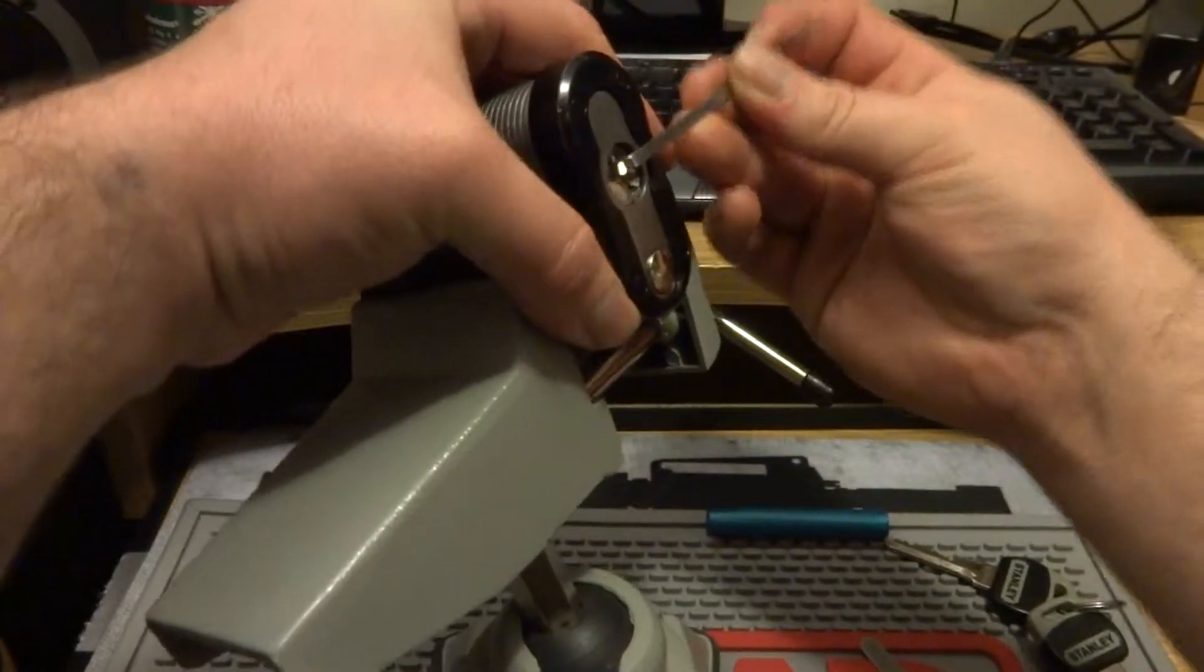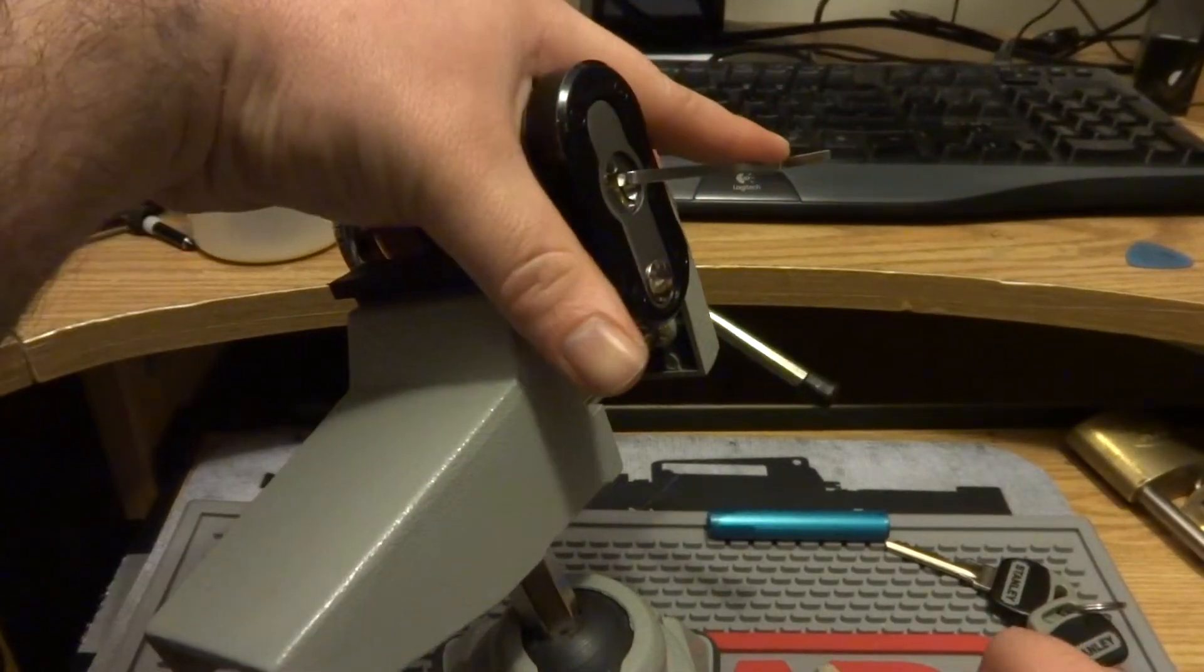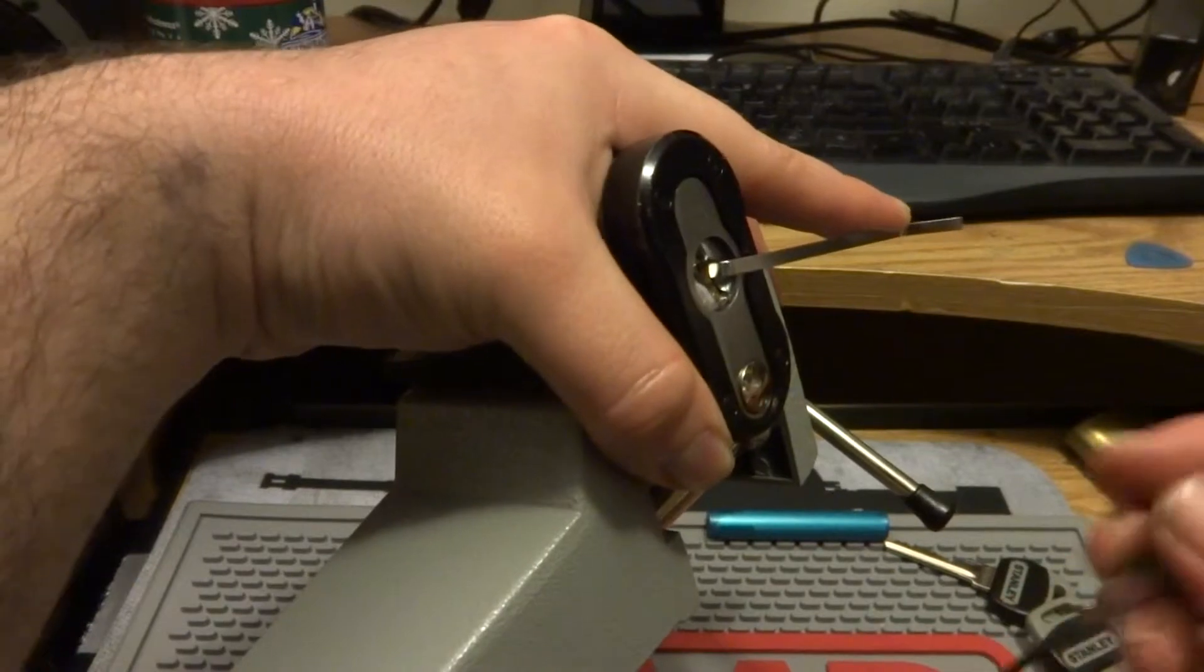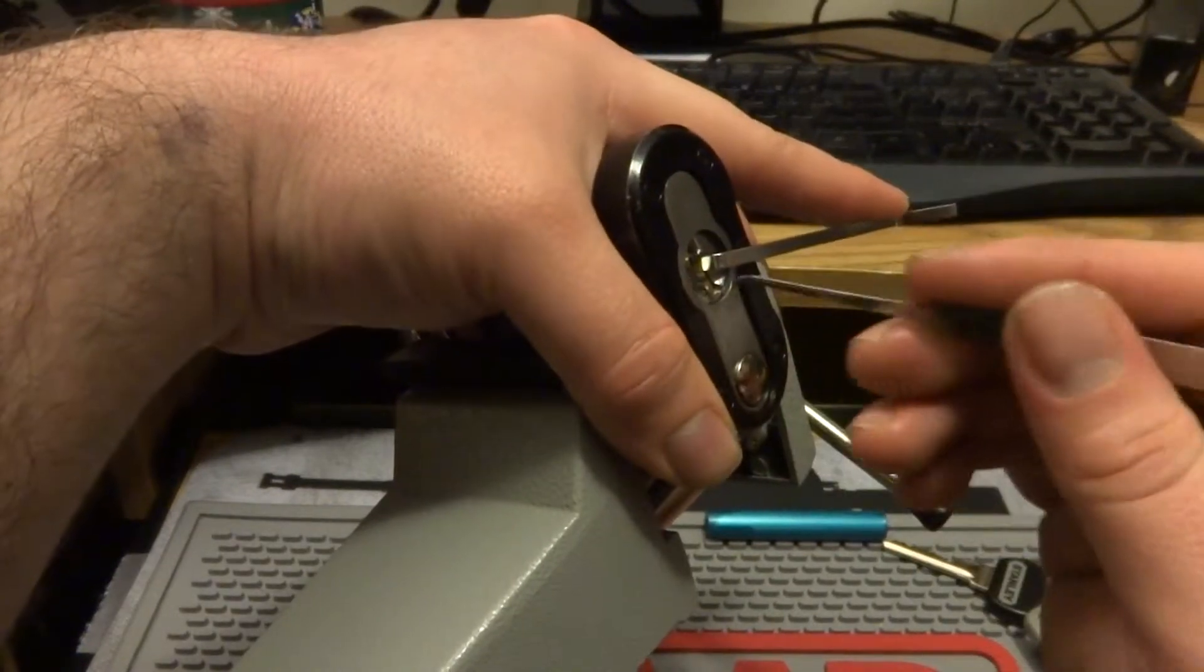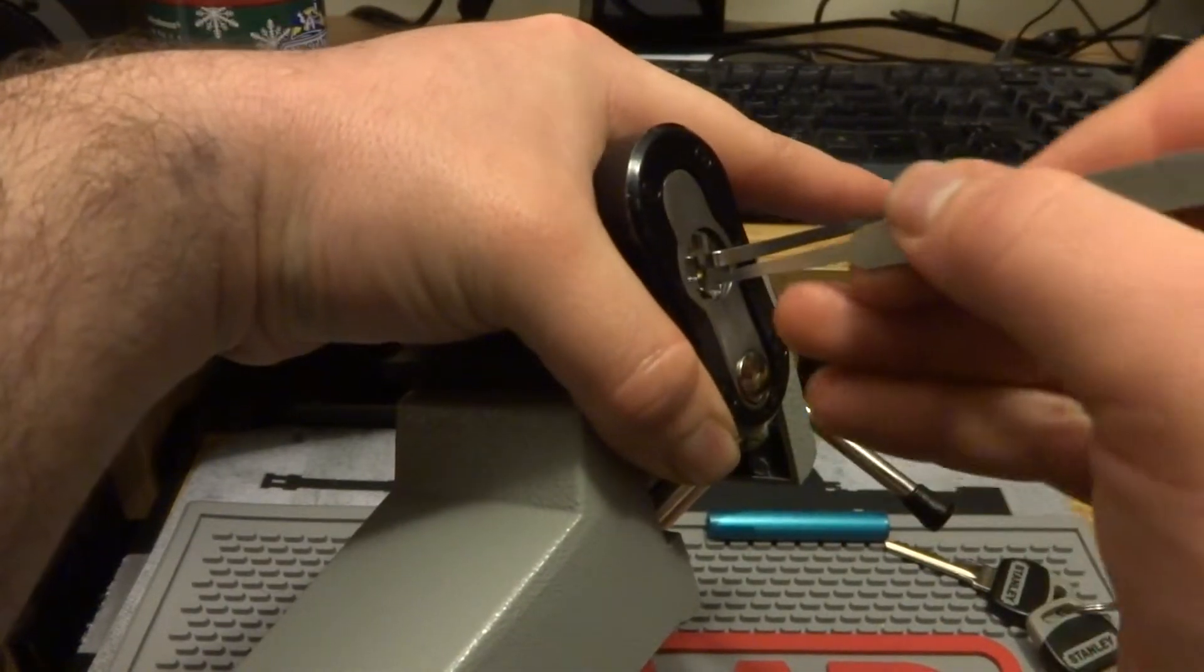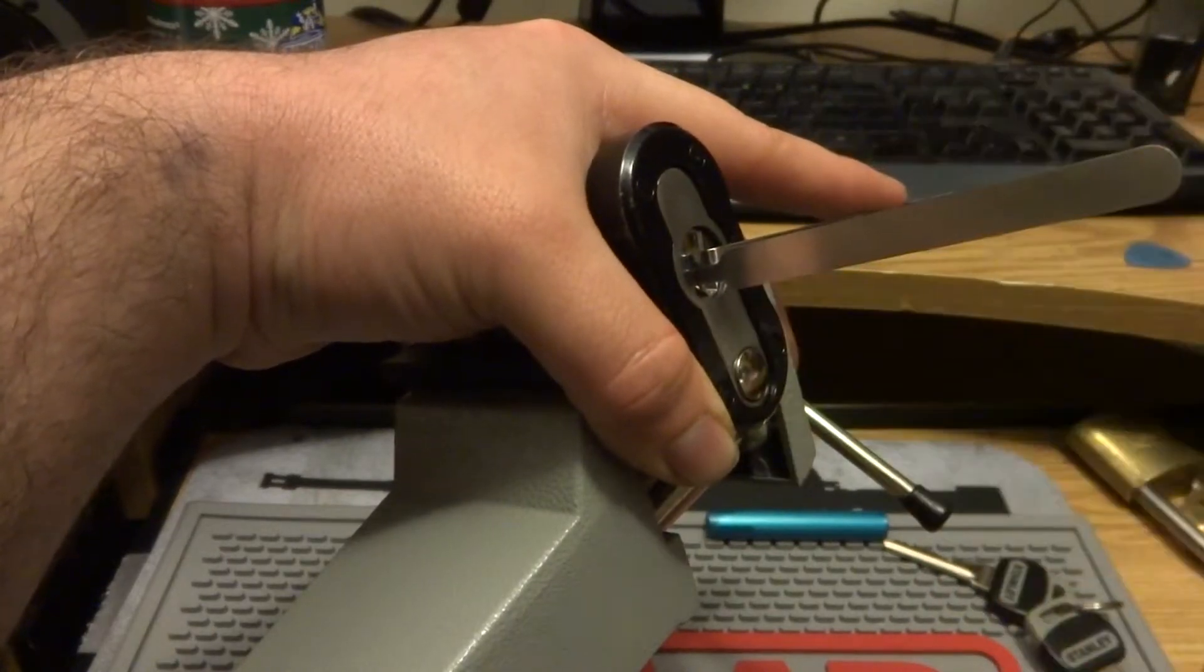We're going to go in the tab of the keyway. Now, this lock does require some decently heavy tension. So, this is going to be a little hard to do in this angle.